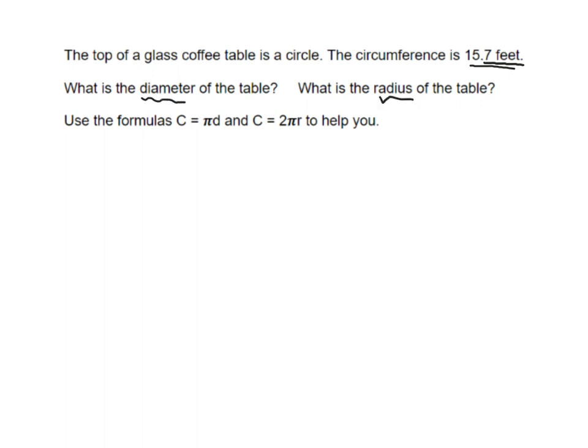Use the formulas C = π times diameter and C = 2 times π times radius to help you. The first thing we're going to do is find diameter. Anytime we are given the circumference, we always want to start by writing the formula for circumference.